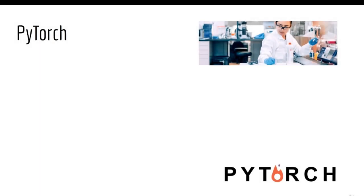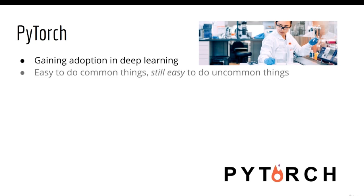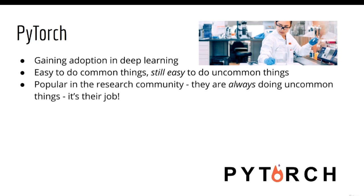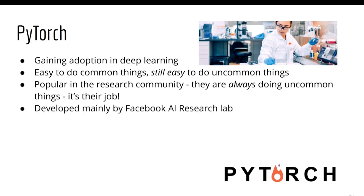PyTorch, on the other hand, has been slowly gaining adoption in the field of deep learning, thanks to the fact that it's relatively easy to do common things and still easy to do uncommon things. For this reason, it's been extremely popular in the research community, who by definition do lots of uncommon things — that's their job, after all. PyTorch is developed mainly by another internet giant, Facebook, specifically the Facebook AI Research Lab.